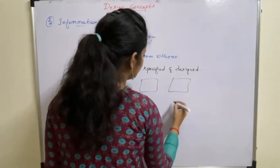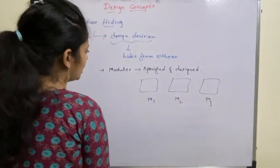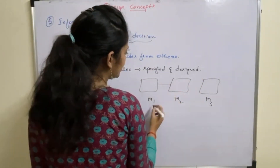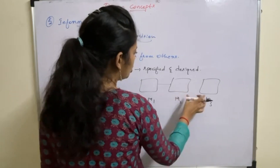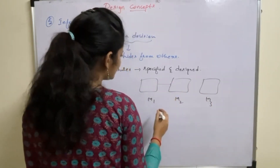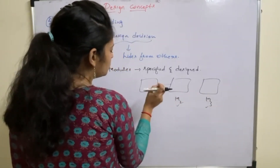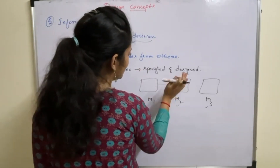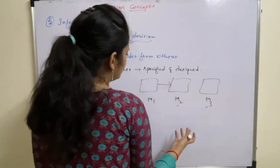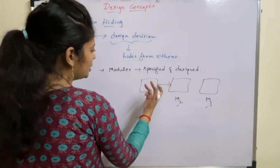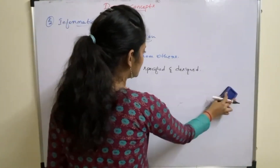Say suppose these are different modules: M1, M2, and M3. These modules should be designed in such a way that the information present in one module is inaccessible to other modules when those modules don't need that information. If M2 and M3 don't require information present in module M1, then that information is inaccessible to them. There's no use providing access if they are not using it.